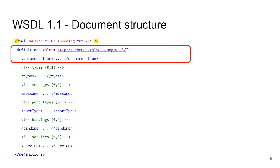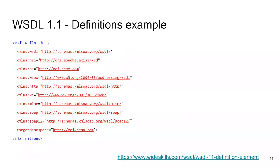The first sub-element of 'definitions' is 'documentation' where you can put any text you want. A typical root element is packed with namespace definitions because WSDL is extensible and each extension or specific binding uses its own namespace. Typically in a WSDL document you will find many XML namespaces, usually all defined on the root element.